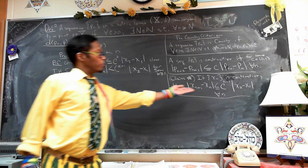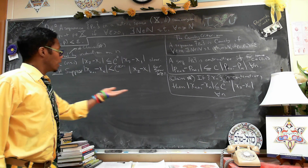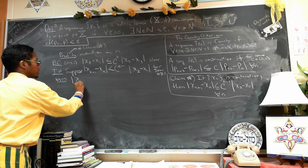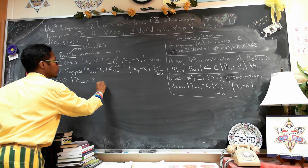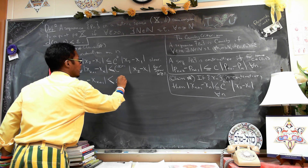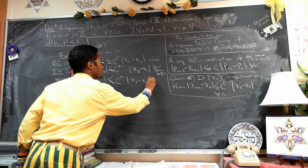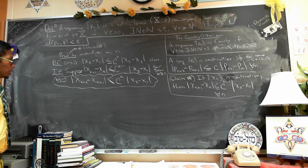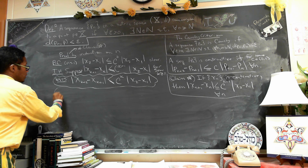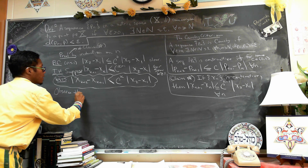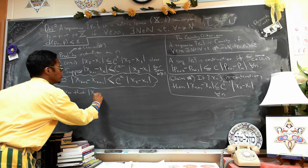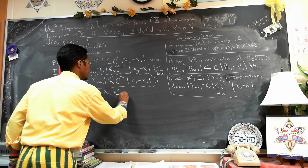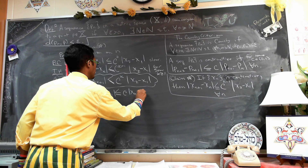We want to show that the claim holds if we replace n with k plus 1. So we want to show: x_{k+2} minus x_{k+1} is less than or equal to c^k times x_2 minus x_1. We start with x_{k+2} minus x_{k+1} is less than or equal to c times x_{k+1} minus x_k.